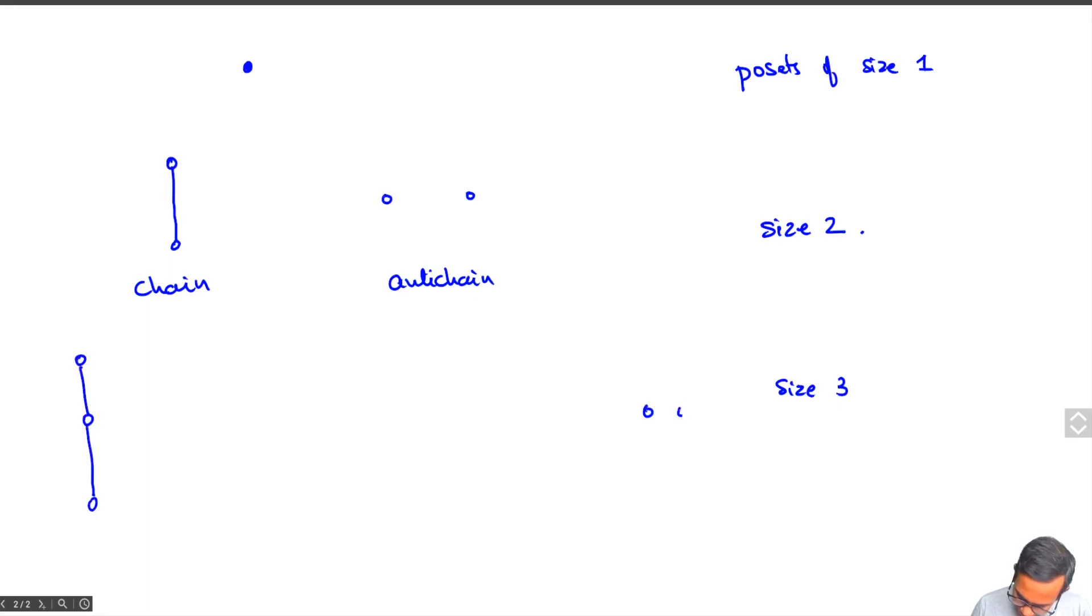So there's always the chain on the one extreme. And then there's the antichain where you have three points and the relation is empty. Nothing, nobody is greater than or equal to anybody. So this is the antichain of size three. This is the chain of size three.